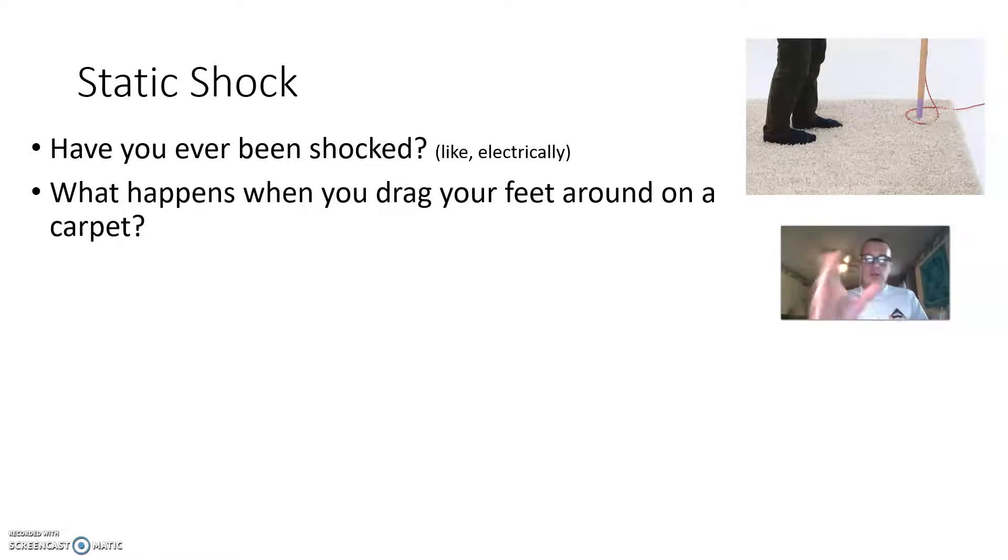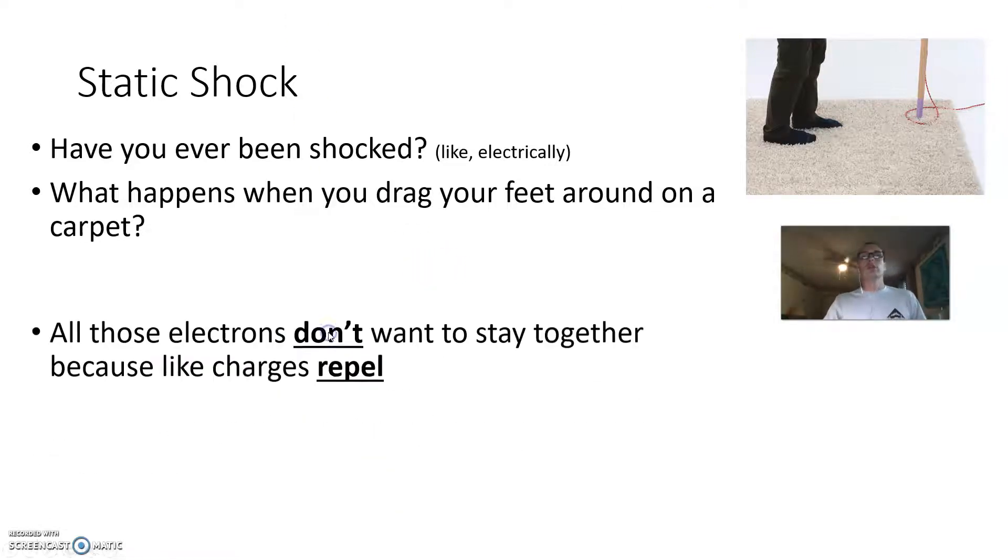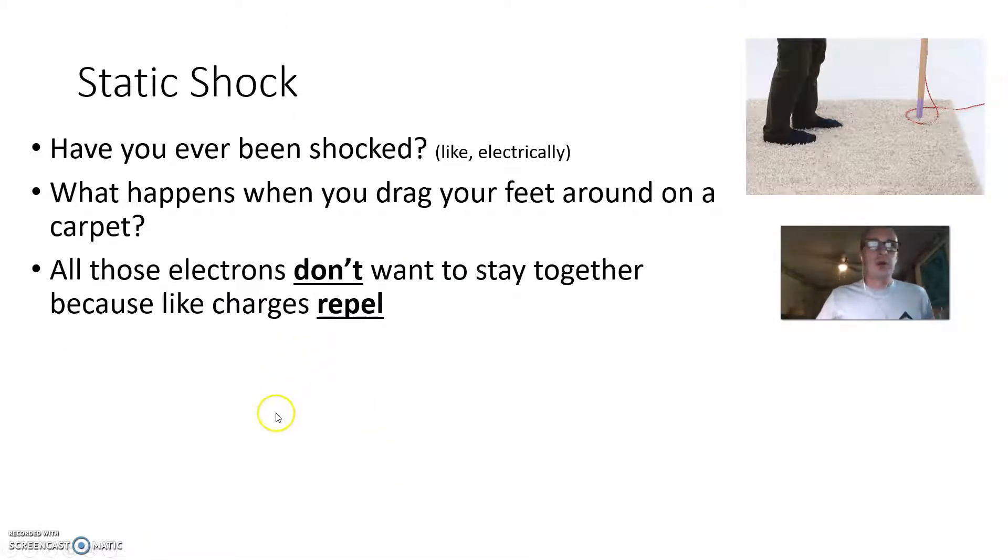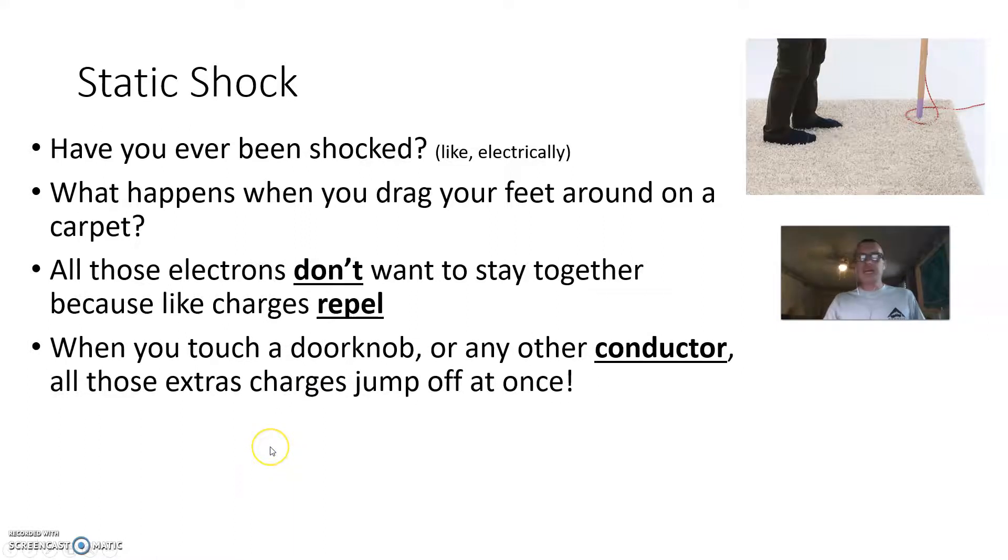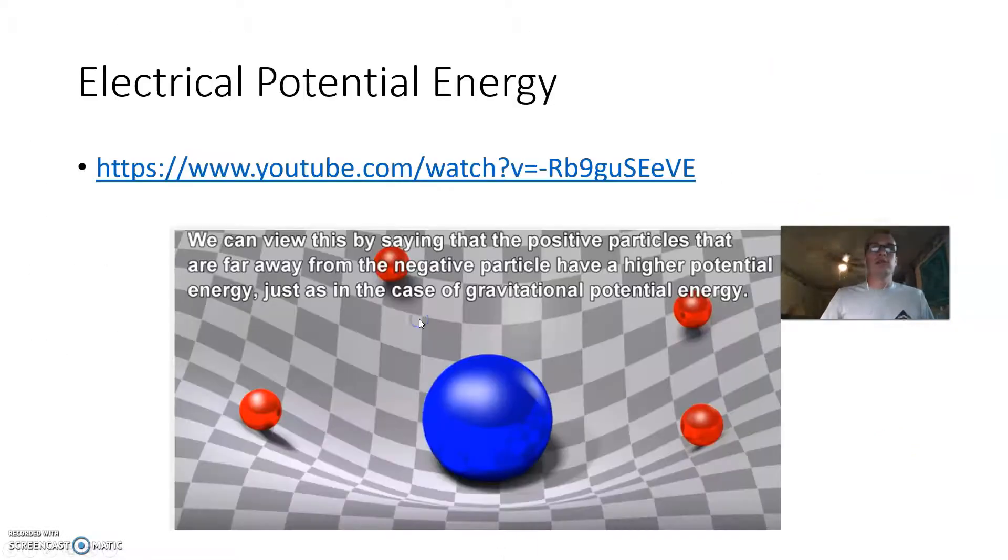And so you're like, oh, electrons, electrons, they're looking for somewhere to go. And you touch the doorknob, bam, they jump off. That's called grounding. They ground to the doorknob there. So they jump off of you. And because the doorknob is a conductor that is going to conduct or allow the flow of those charges to hop off there.